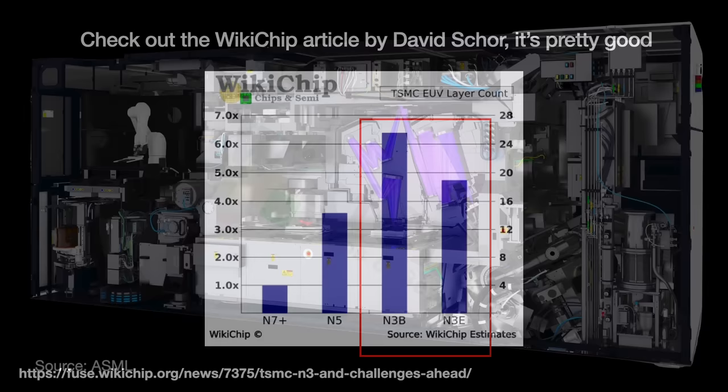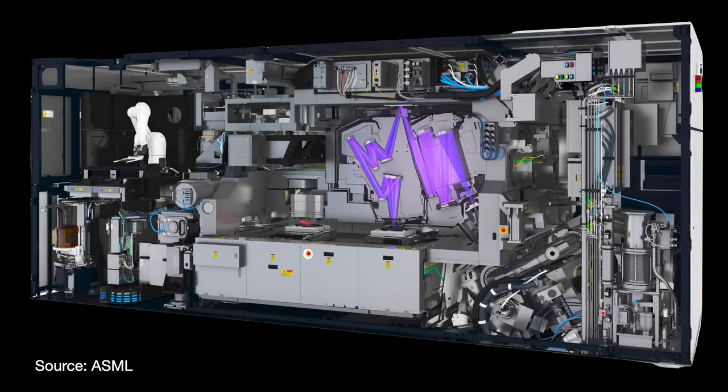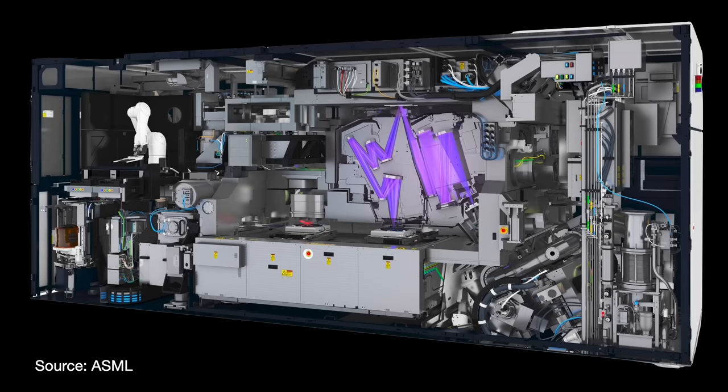It is a bit strange, right? TSMC has more EUV machines than any other fab in the world, but their newest and biggest N3 process is nevertheless pulling back on EUV. Why? Nobody knows but TSMC and ASML. But I have a theory.